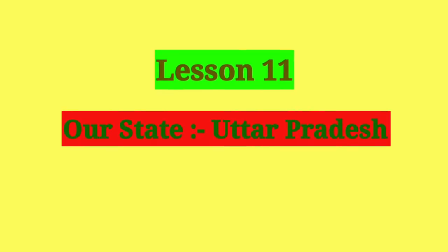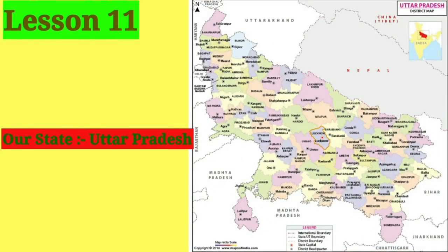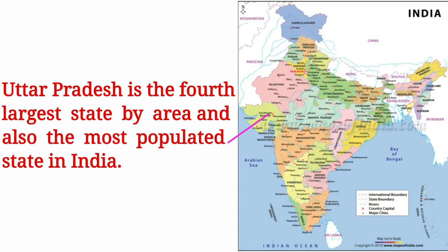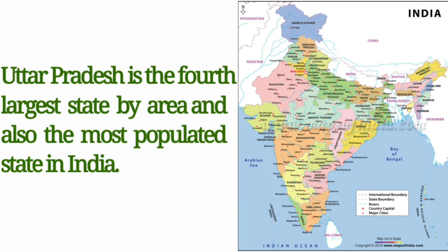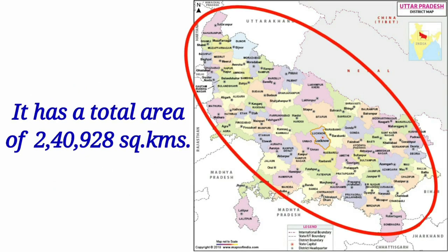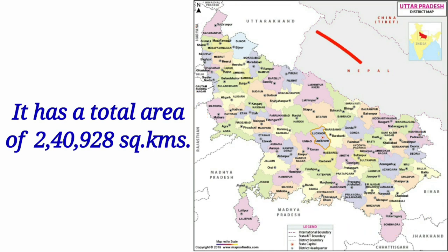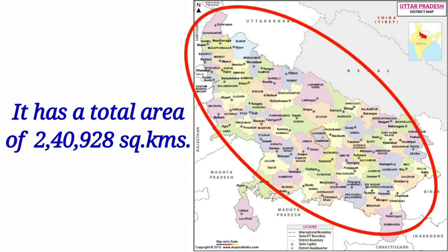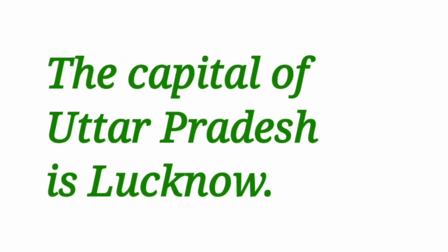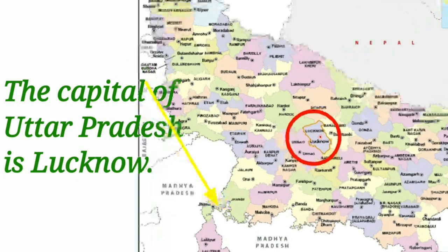Let us go through the important points of the lesson. Our state, Uttar Pradesh, is the fourth largest state by area and also the most populated state in India. It has a total area of 2,40,928 square kilometers, which is 7.33% of the total area of India. The capital of Uttar Pradesh is Lucknow.